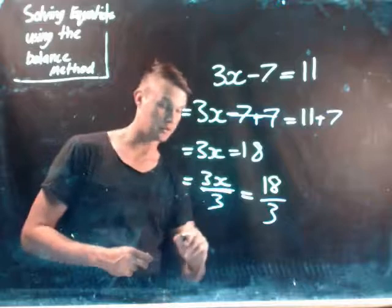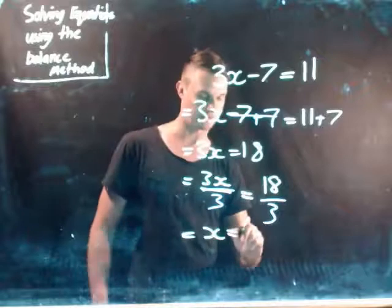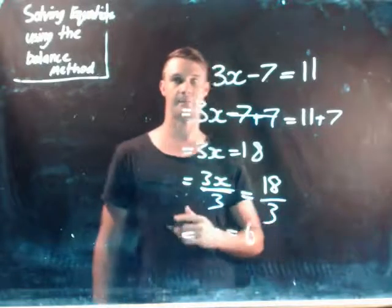So 3x divided by 3 equals 18 divided by 3. So what I'm left with should be our answer. That means x equals 18 divided by 3 is 6.